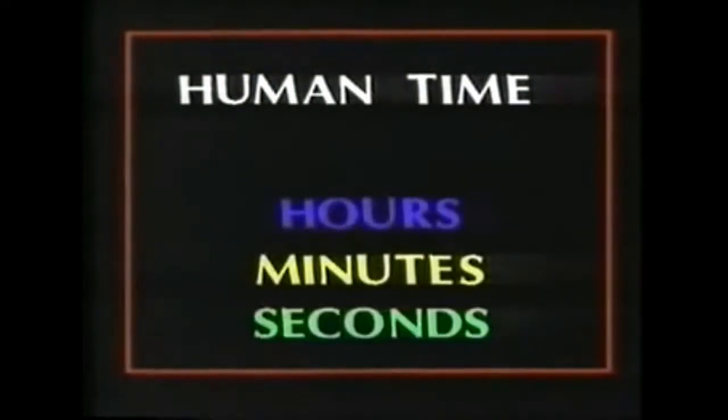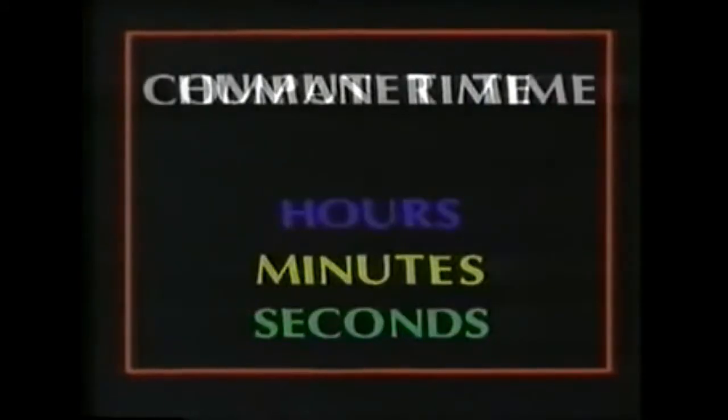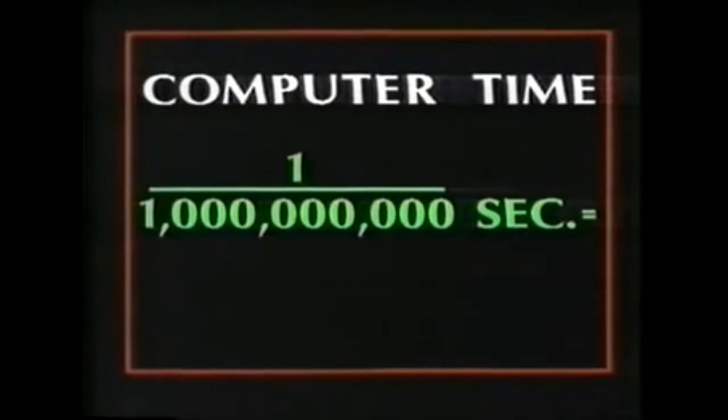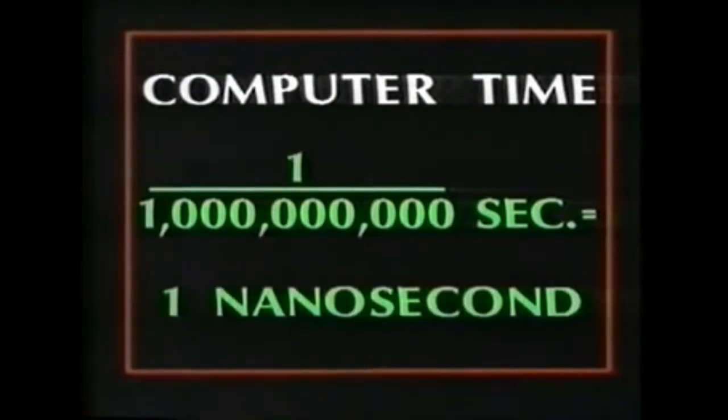In fact, for most purposes, our everyday life is divided into hours and minutes and seconds, whereas the computer lives in a world of thousandths of a second — milliseconds — millionths of a second — microseconds — and billionths of a second — nanoseconds.